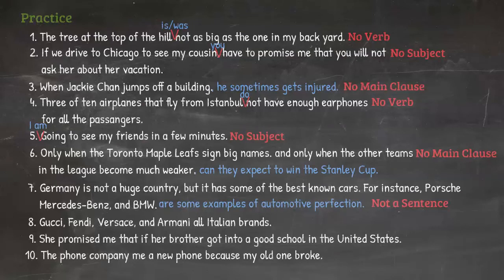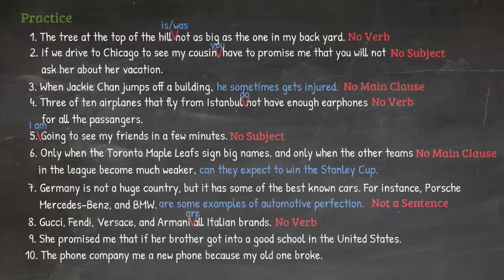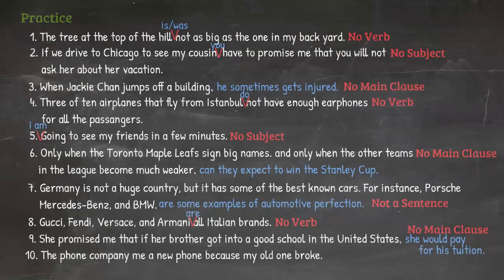Number eight: 'Gucci, Fendi, Versace and Armani all Italian brands.' Here there is no verb. Correction: 'Gucci, Fendi, Versace and Armani are all Italian brands.' Number nine: 'She promised me that if her brother got into a good school in the United States.' There is no main clause. Correction: 'She promised me that if her brother got into a good school in the United States, she would pay for his tuition.' And number ten: 'The phone company a new phone because my old phone broke.' Here we don't have a verb. Correction: 'The phone company gave me a new phone because my old phone broke.'